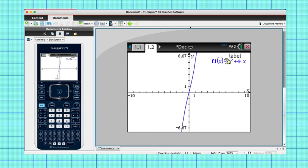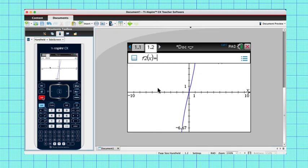Now draw the graph 6 minus x. So tab 6 minus x, enter.